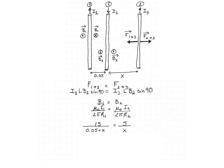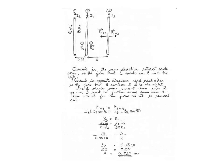We now have one equation with one unknown which we can solve. Dividing both sides by 5, we get 3x = 0.05 + x. Solving for x gives x = 2.5 centimeters. So wire 3 is 2 and a half centimeters to the right of wire 2. Here's the full page solution.